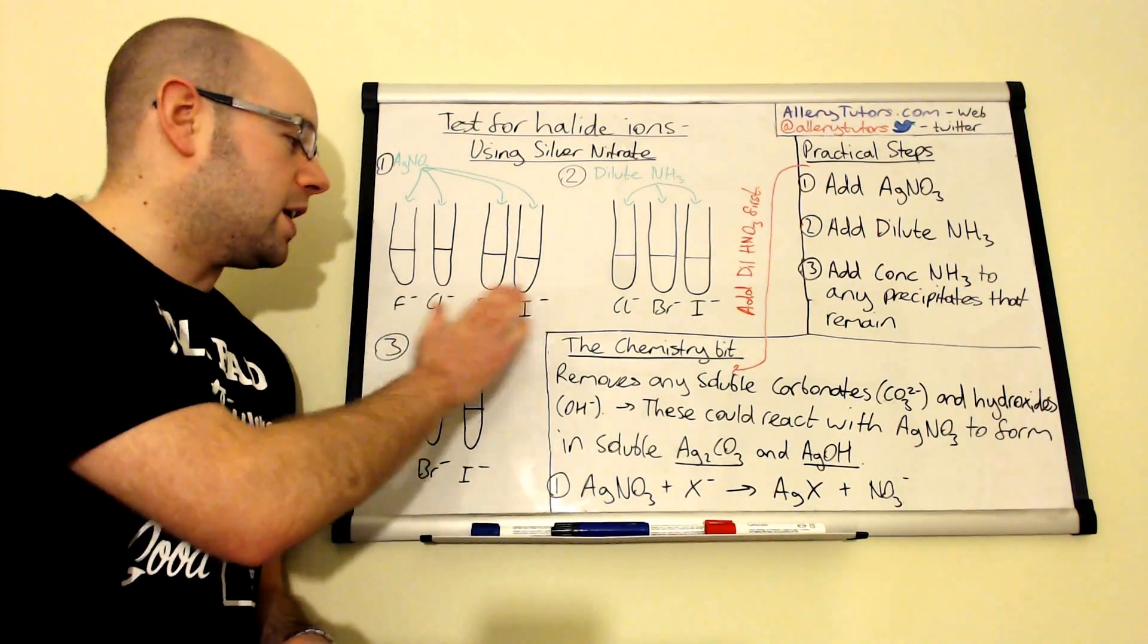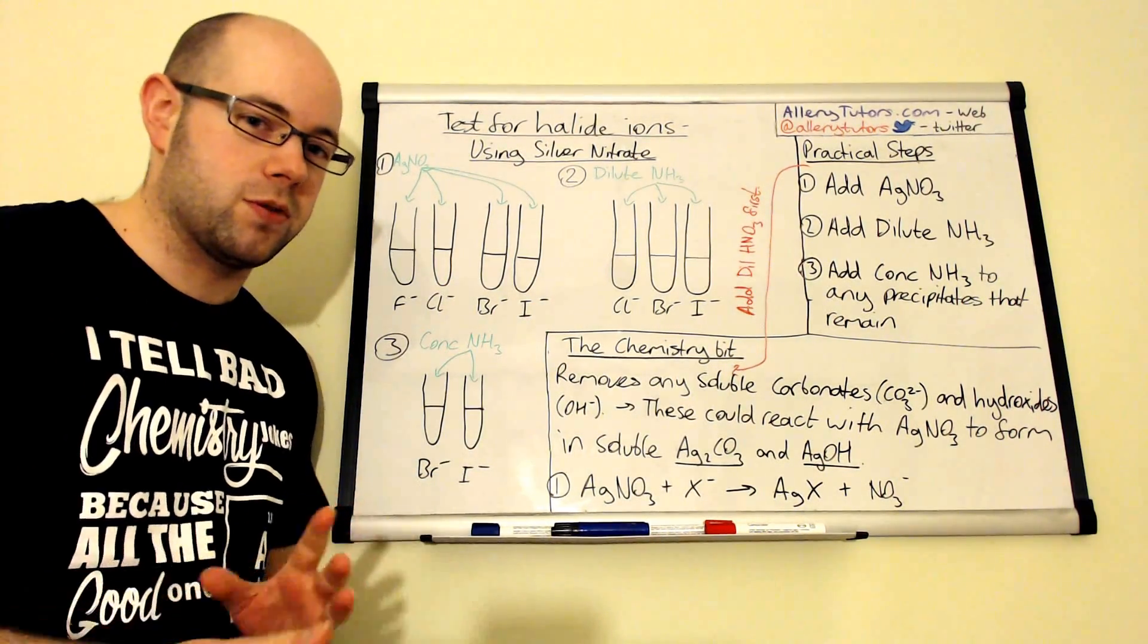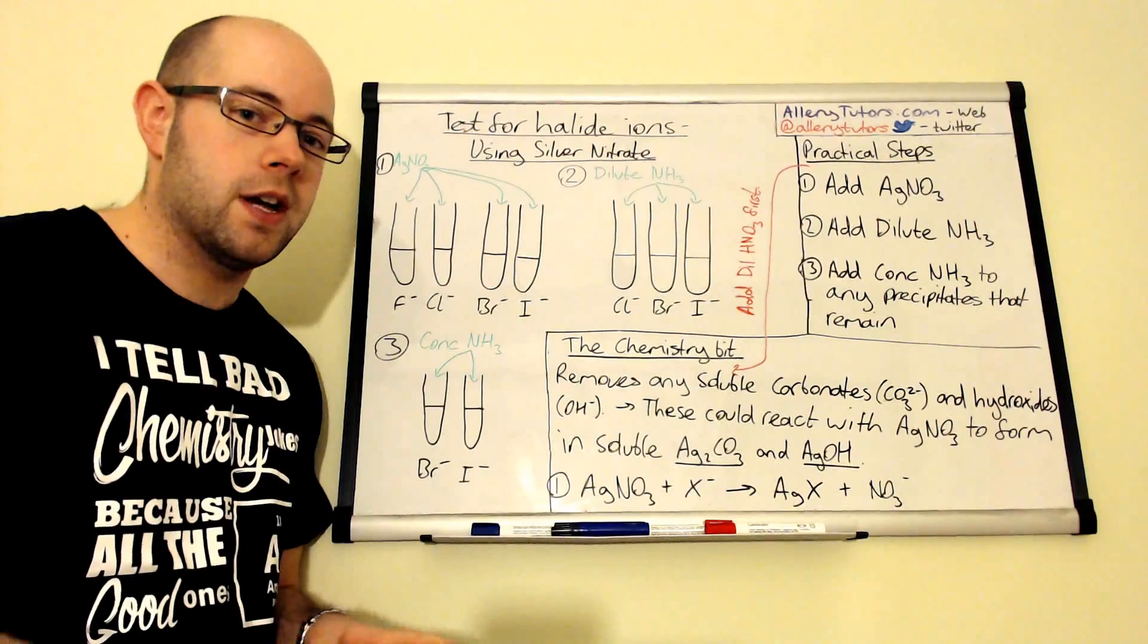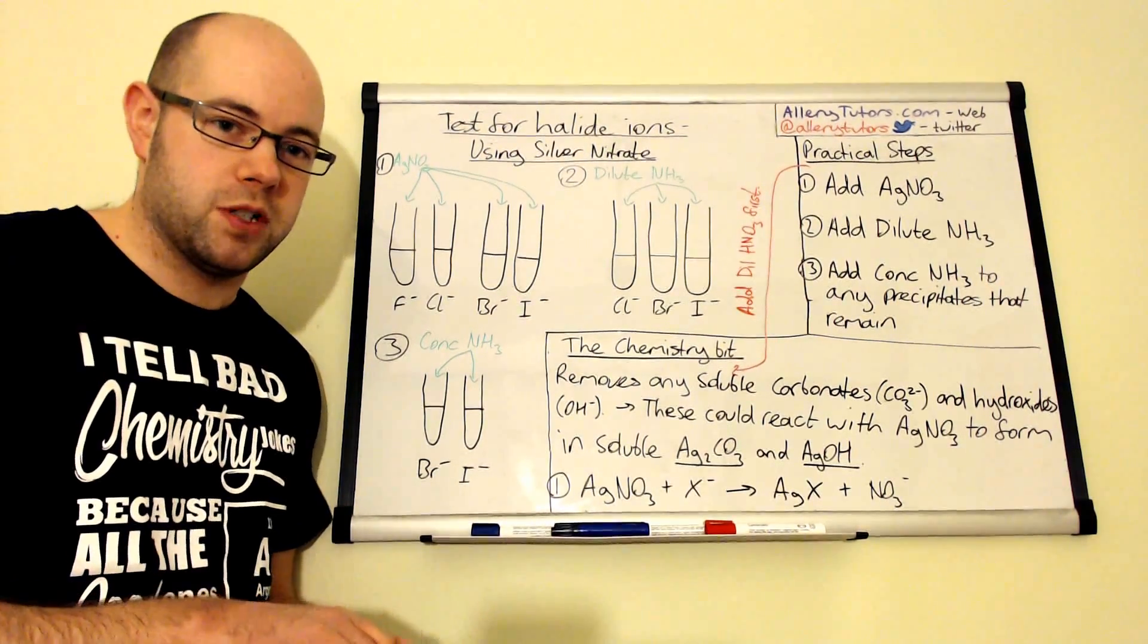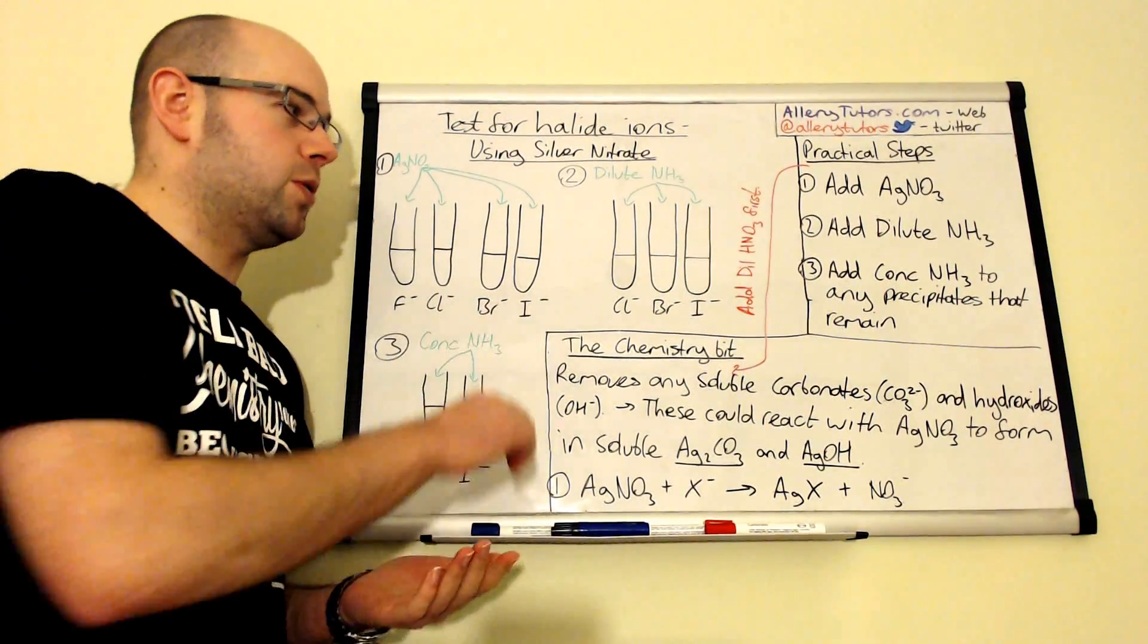The sodium chloride will obviously break down or split up and you'll have Na+ and Cl- ions. So all these ions you're going to see in this video will come from a salt such as sodium chloride, sodium bromide, etc., added to water and formed into a solution.